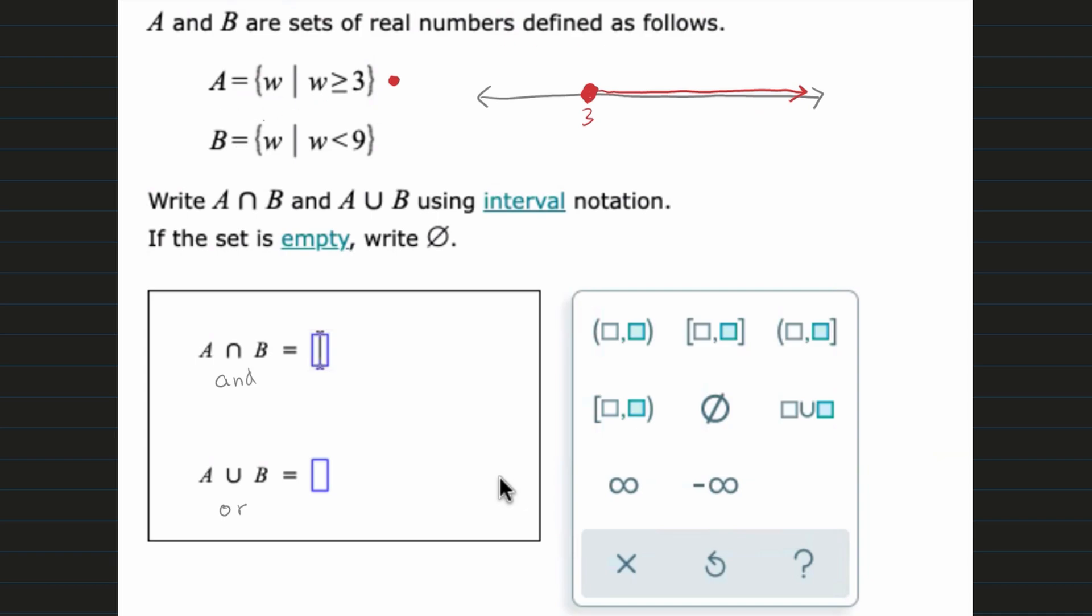Now let's look at our B. So for B, we're going to represent in blue. It's going to be an open circle, and that's because we don't have the equal sign underneath. So W has to be less than 9. So if we find 9, say it's right here, we have an open circle, and we're going this way.